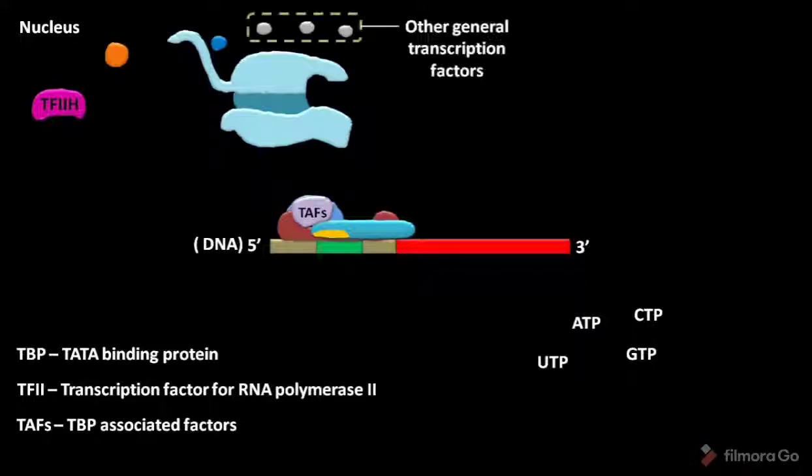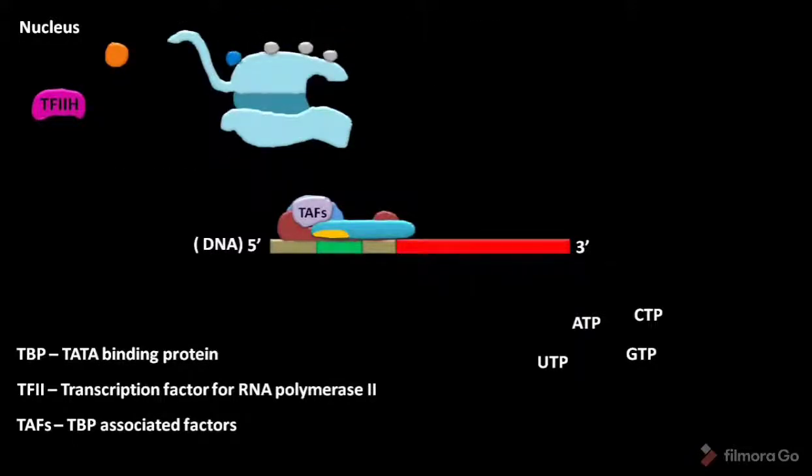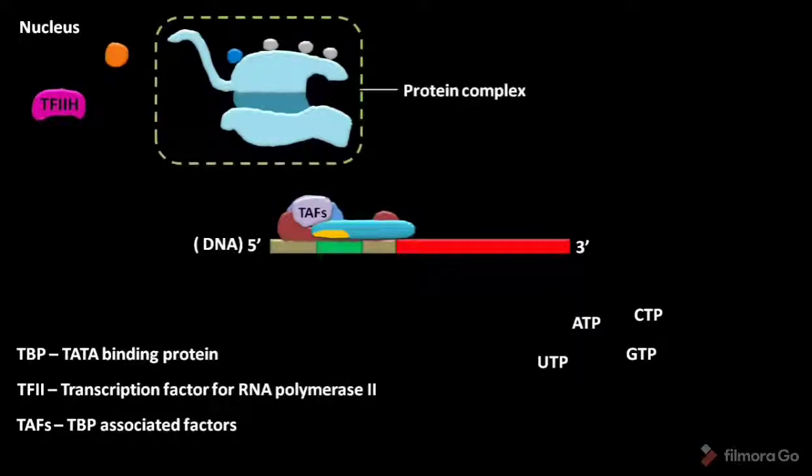The other general transcription factors and TFIIF then assemble with RNA polymerase II. TFIIF helps the RNA polymerase II in targeting to the promoter. The whole protein complex then binds to the promoter.